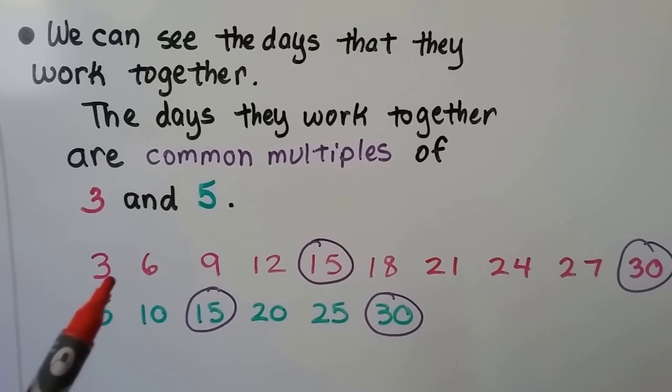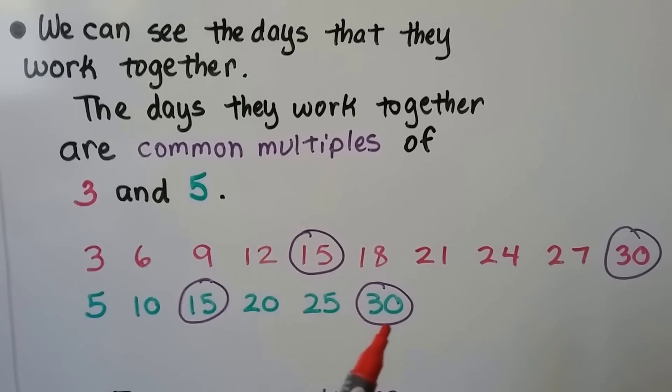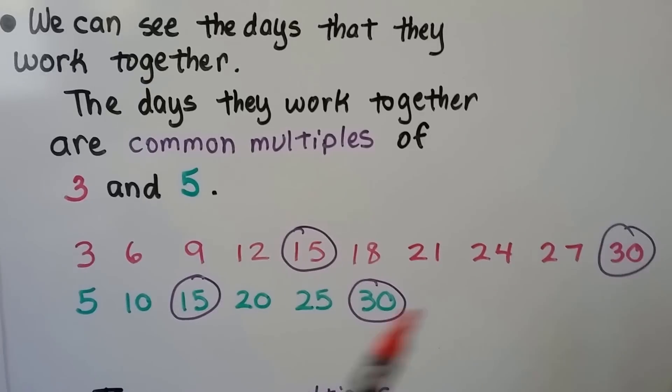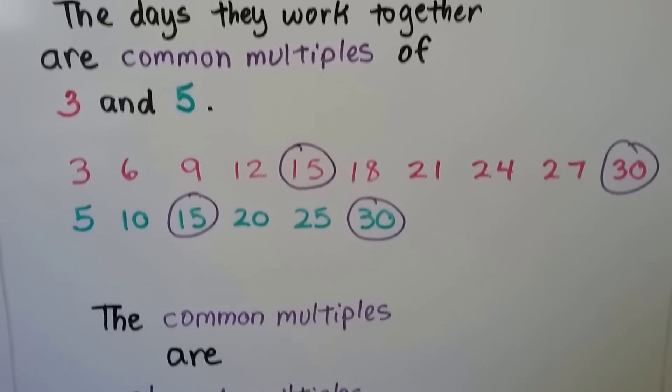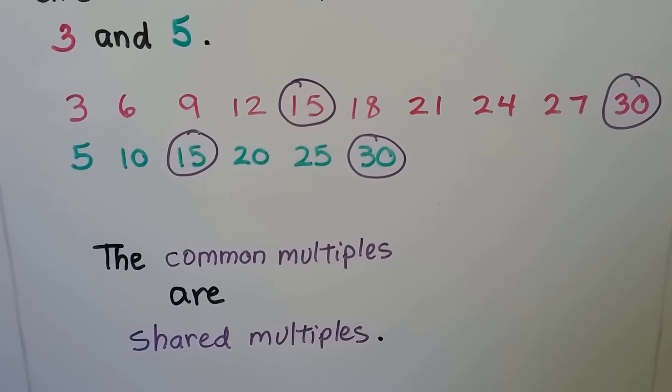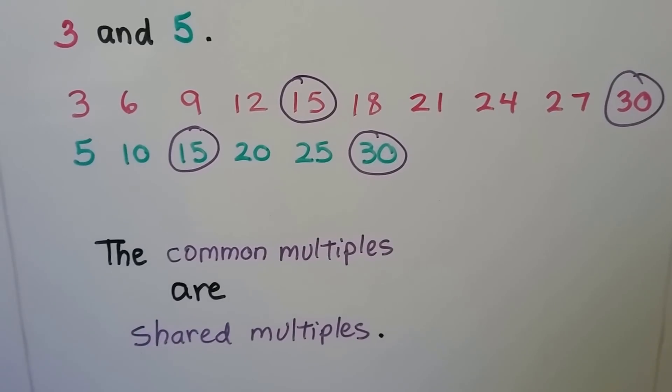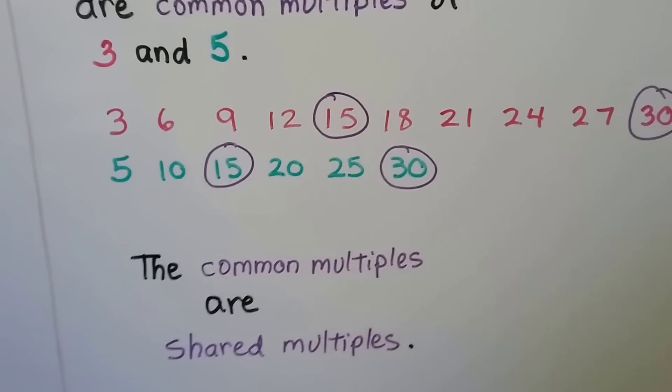If we make a list of the multiples of 3 and a list of the multiples of 5, they have 15 and 30 in common. The common multiples are shared multiples. So it's like shared products.